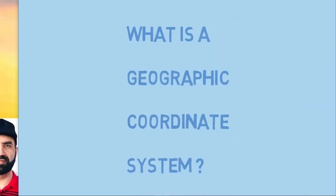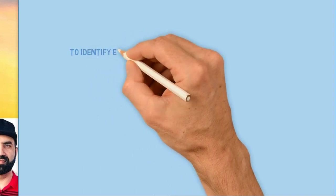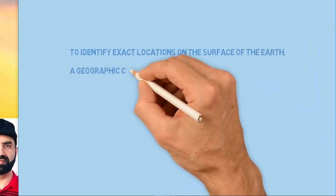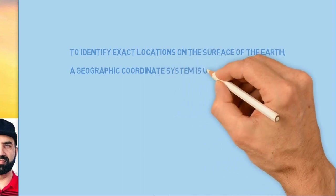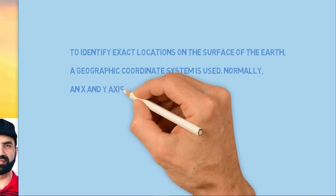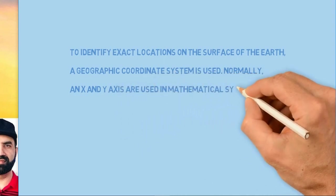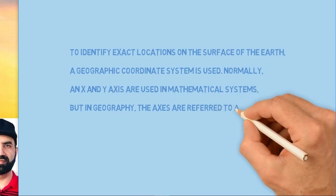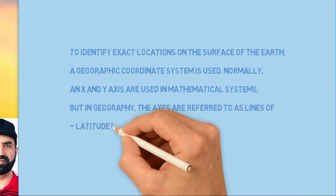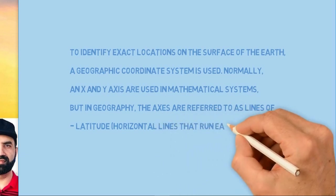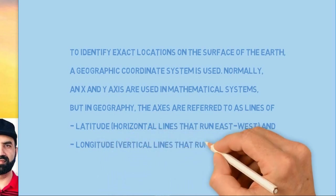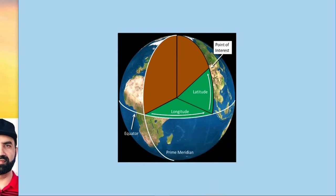What is a geographic coordinate system? It's basically to identify exact locations on the surface of the earth. A geographic coordinate system is used. Normally, X and Y axes are used in mathematical systems, but in geography these axes are referred to as latitude and longitude. Latitude is the horizontal lines that run east to west, and longitudes are vertical lines that run north to south. Here is an example of latitude and longitude.